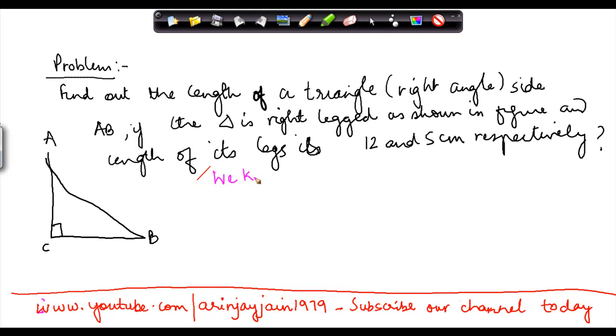We know, let's say this is 12 and this is 5. We know that in a right-angled triangle, hypotenuse square is equal to a square plus b square.